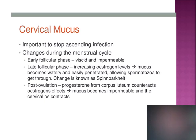There is a change in cervical mucus depending on the days of the menstrual cycle. Cervical mucus is important for stopping ascending infection. During the early follicular phase, it is thick and impermeable. In the late follicular phase, due to increasing estrogen, the mucus becomes watery and easily penetrated, allowing spermatozoa to pass through. It can stretch up to 8 or 10 cm — this change is known as spinnbarkeit.